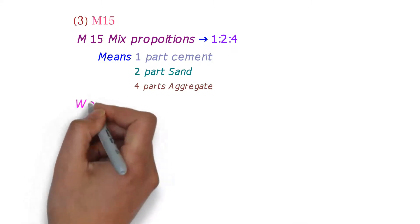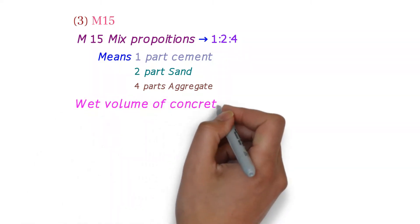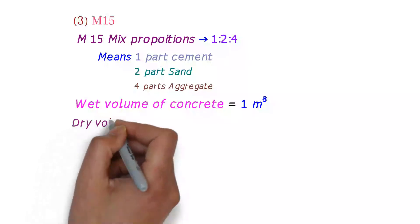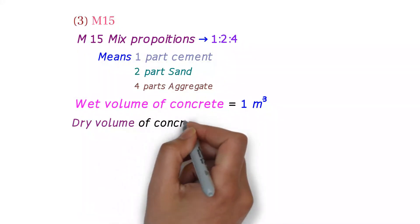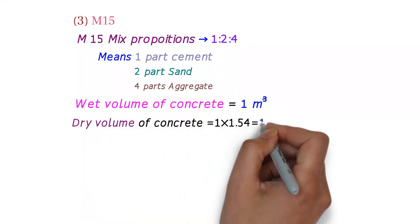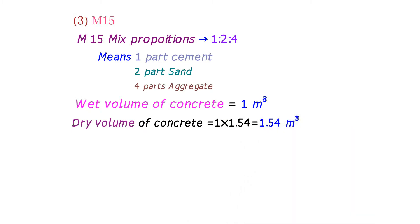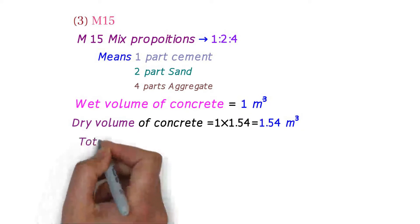The total wet volume of concrete is one cubic meter. We are converting this wet volume into dry volume by multiplying a factor of 1.54, giving us the dry volume of concrete as 1.54 cubic meters.